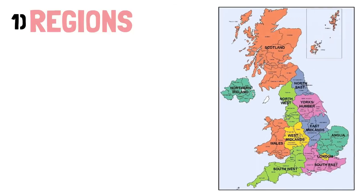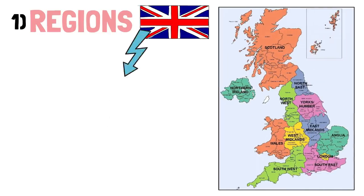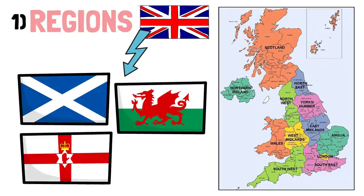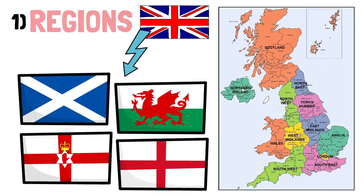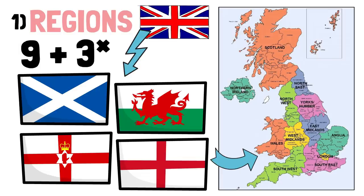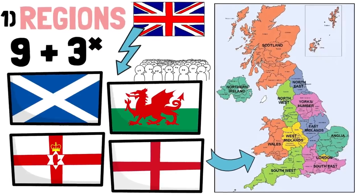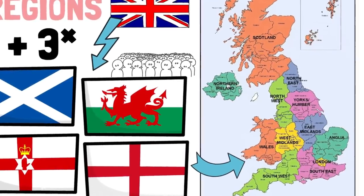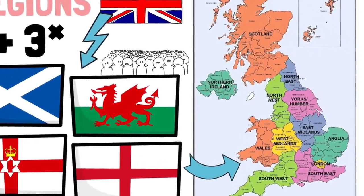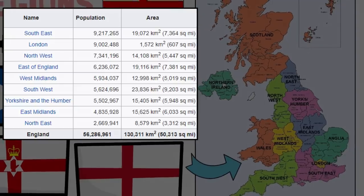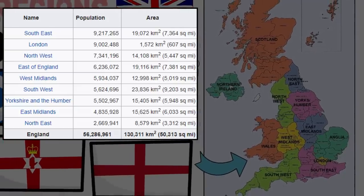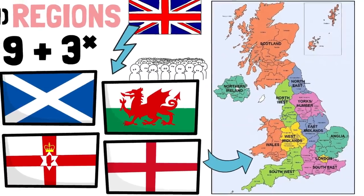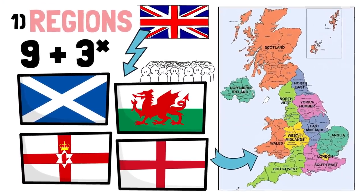The United Kingdom is divided into its constituent countries: Scotland, Wales, Northern Ireland, and England. Each of the first three have their own regions as well, but many statistical maps show them together, while England is divided into nine regions. These nine regions vary a lot — the highest population is in the Southeast and London, each with just over 9 million people, while the Northeast only has 2.6 million.